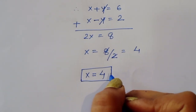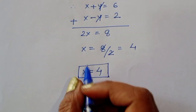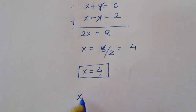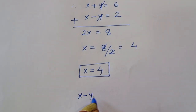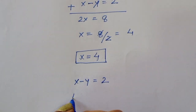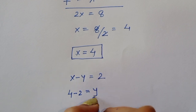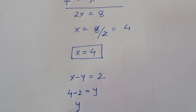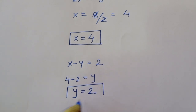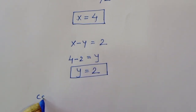Now we find the value of y. From x - y = 2, substituting x = 4: 4 - y = 2, so y = 4 - 2 = 2. Therefore y = 2. In Case 3, we got the values x = 4 and y = 2.